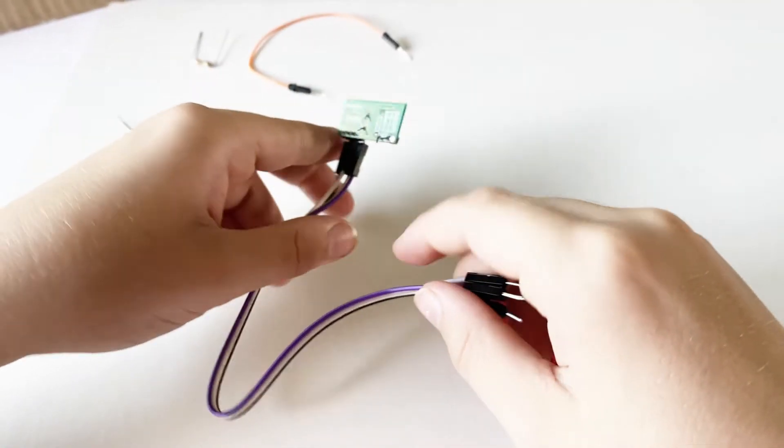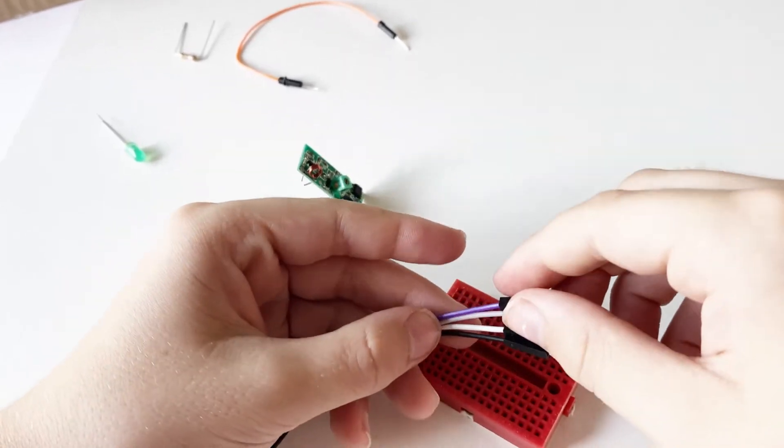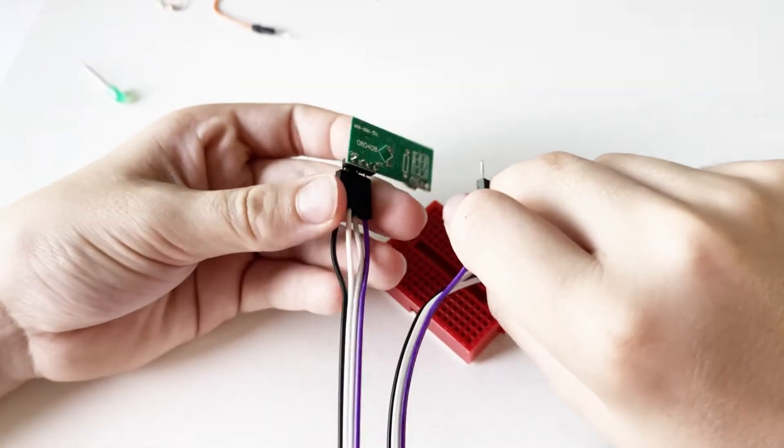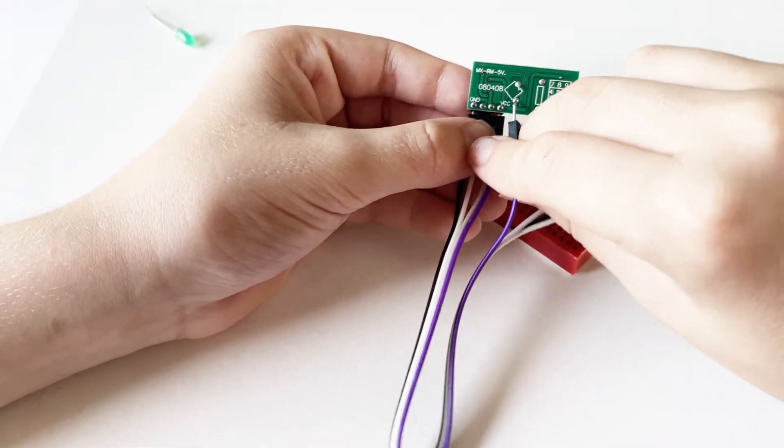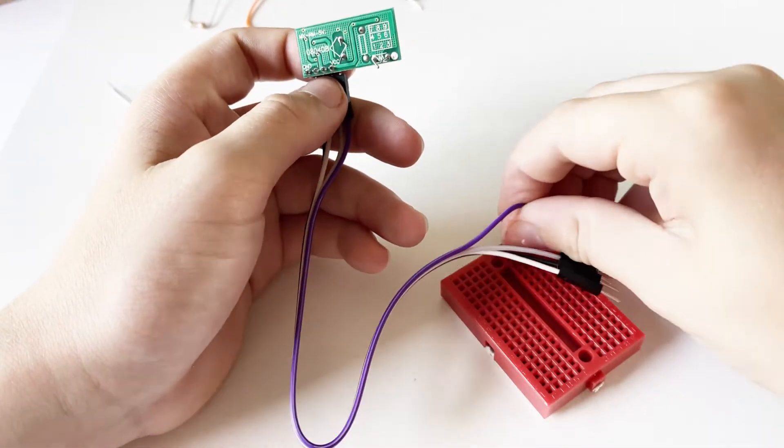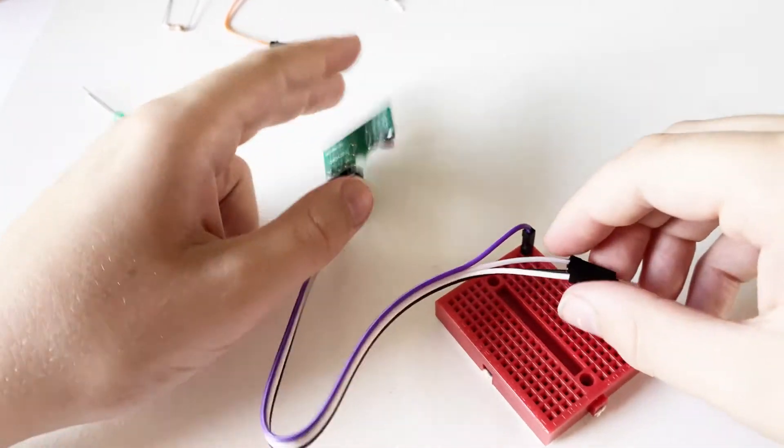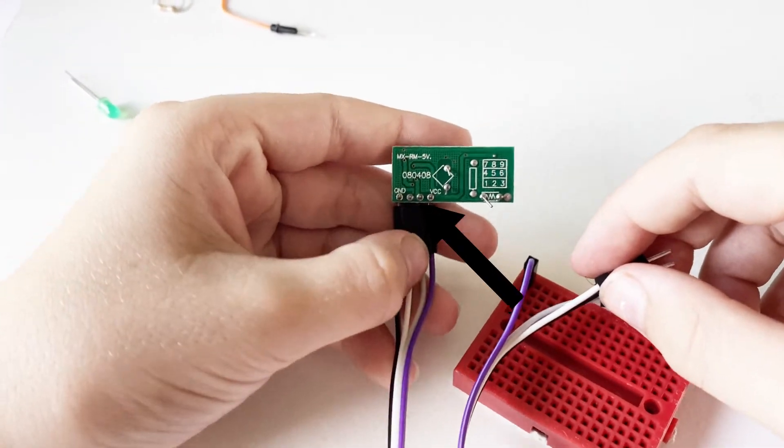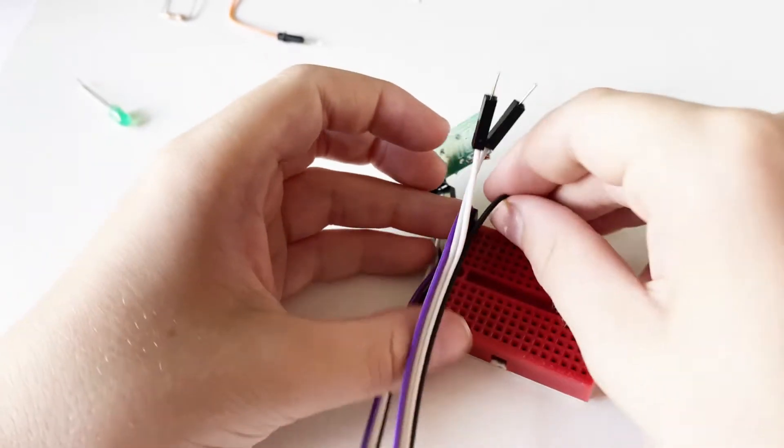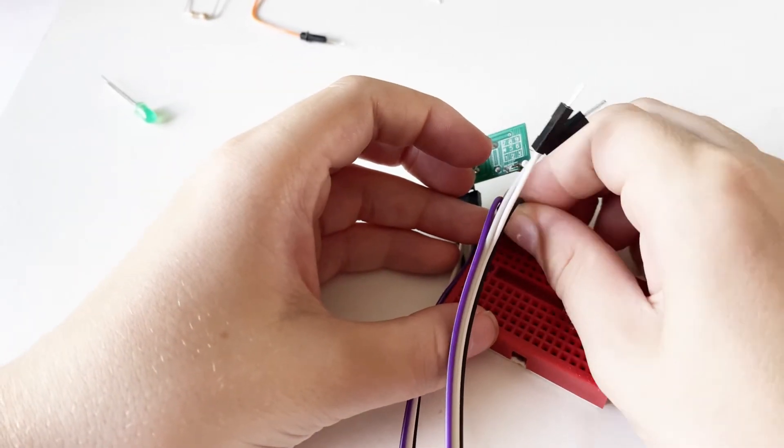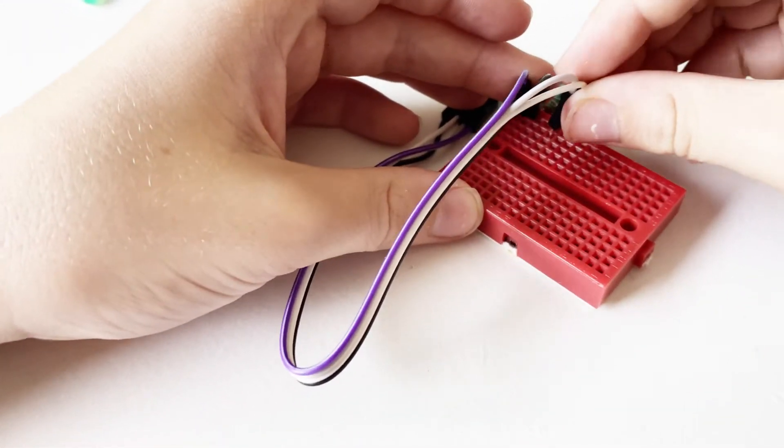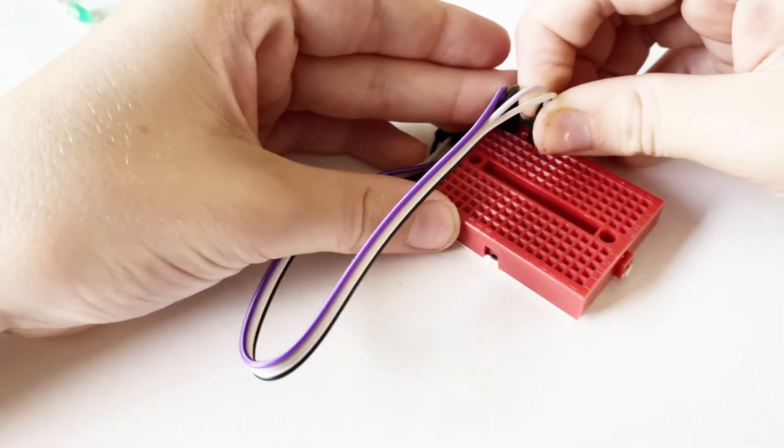Now we can get the breadboard and plug the other end of the wire that goes into the VCC pin into one row of holes in the breadboard, and the wire that goes to GND next to that. Then we can get the other two wires and put them in the same row of holes as each other.